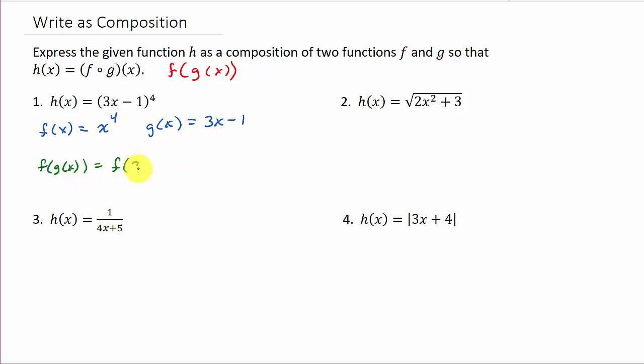This is f of g of x. Well, what's g of x? It's 3x minus 1. So I'm going to take this and put it in the place of x. This will give me 3x minus 1 to the 4th, and you can see we end up with h of x. That's all we're doing here - finding the two functions so that when I do this, I end up with h of x.